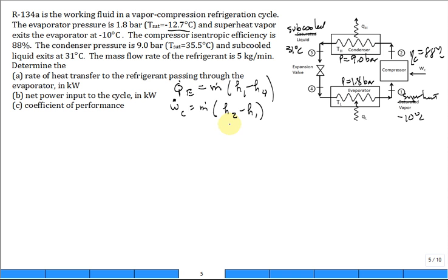And then the coefficient of performance, COP, is going to be the ratio of what I want, a lot of cooling in the evaporator, to what I have to pay for to run that compressor. So the answer for part A and B, the ratio, is the answer to part C.